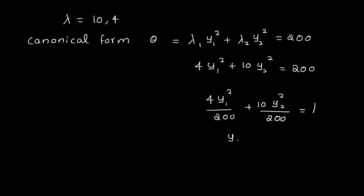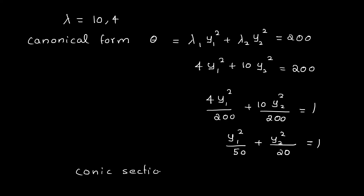Simplifying: y1²/50 + y2²/20 = 1. This is the form of an ellipse. The conic section is an ellipse, matching the standard form x²/a² + y²/b² = 1.